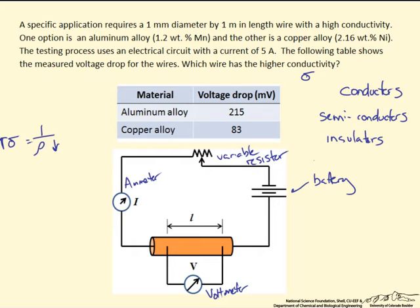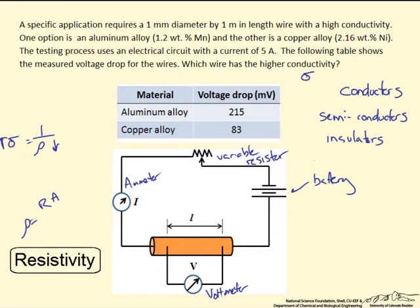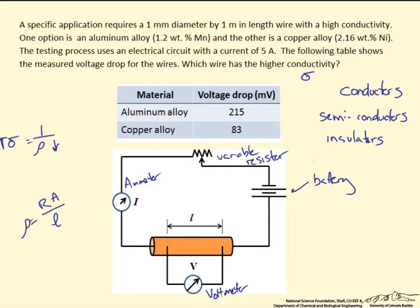We need to calculate the resistivity to get an idea of the conductivity of these materials. Resistivity is independent of geometry because we are measuring just between two points at distance L. It is related to resistance through the following expression: resistance times the cross-sectional area of the material, divided by the length between the two measurement points. We are given a voltage drop and the current, and we know the length and can calculate the area, but we do not yet have the resistance.